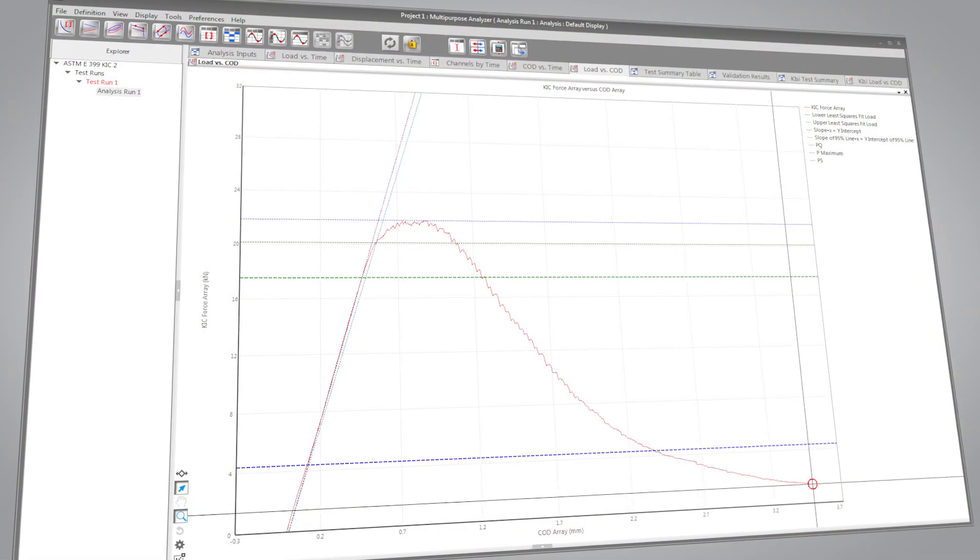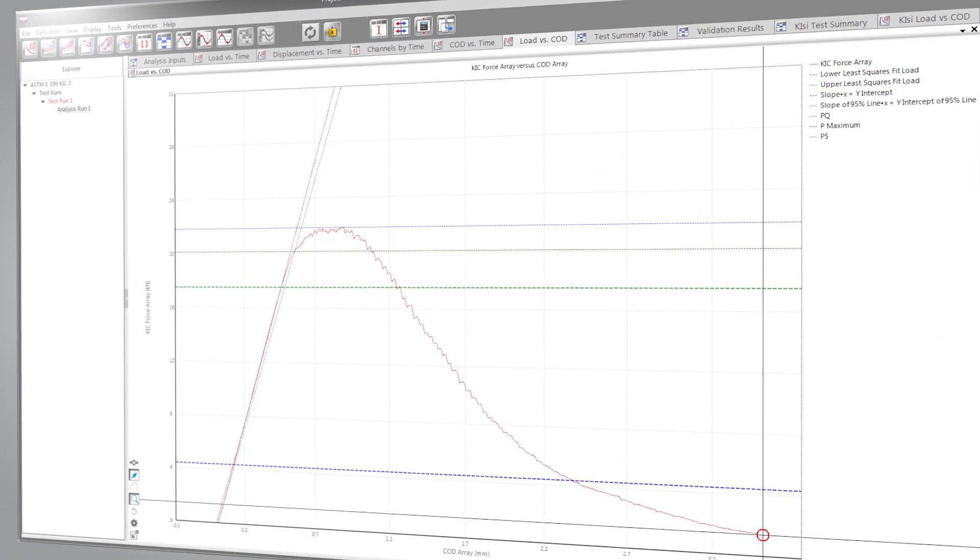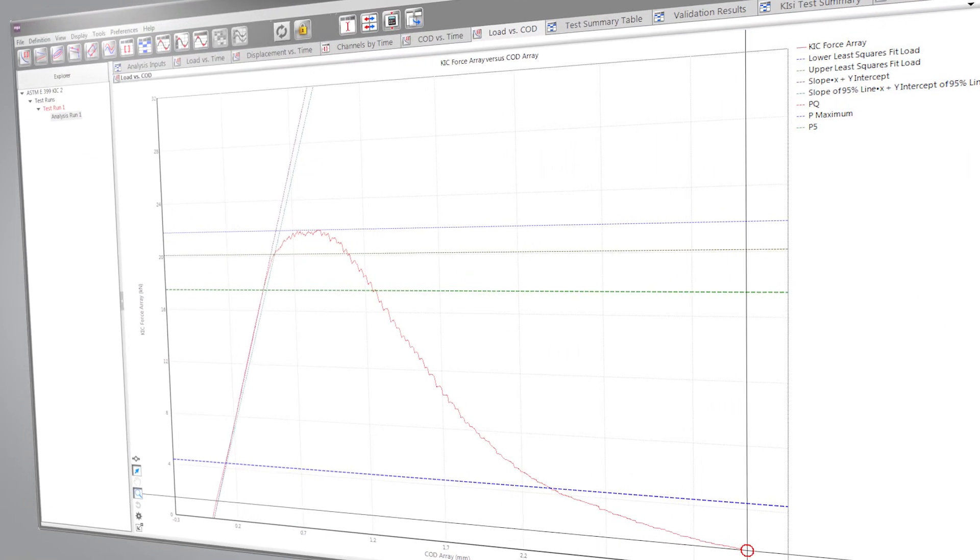Now that the test is finished, we see from the validity results that the measured KQ value is indeed a valid K1C result. One of the complications of fracture toughness is that you really don't know if the validity criteria will be met until after the test.